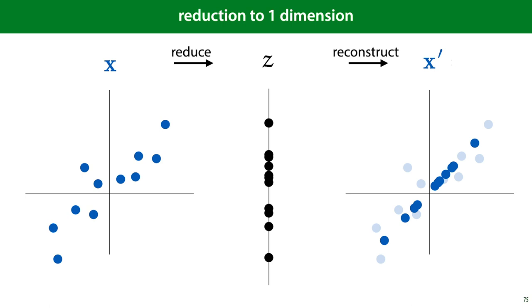We'll add the constraint that both the function that reduces the data and the function that reconstructs the data should be linear. We'll also assume that the data is mean-centered, so that we won't need to apply any translations. The mean of the original data, the reduced data, and the reconstructed data is zero, or the zero vector.